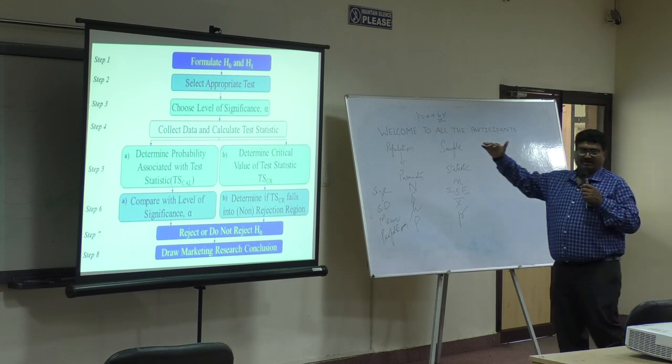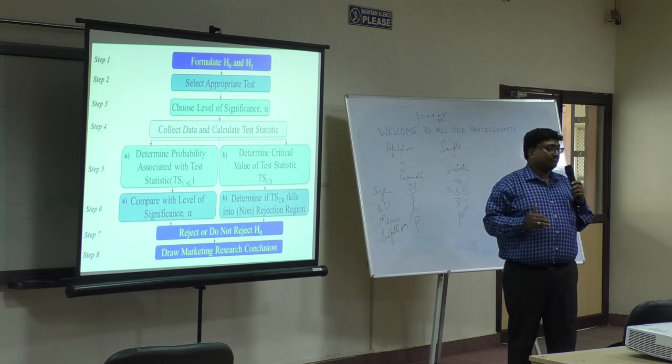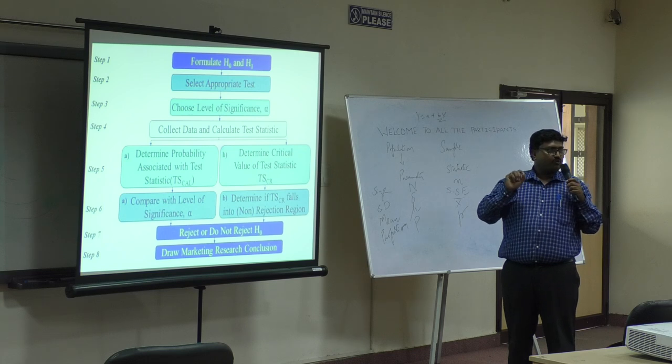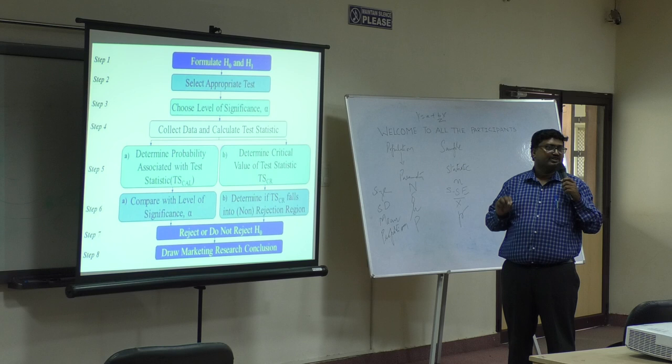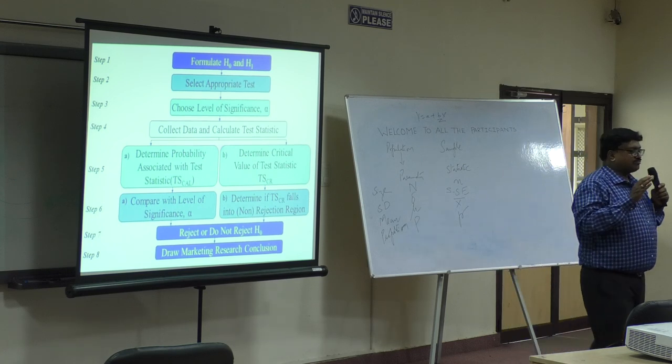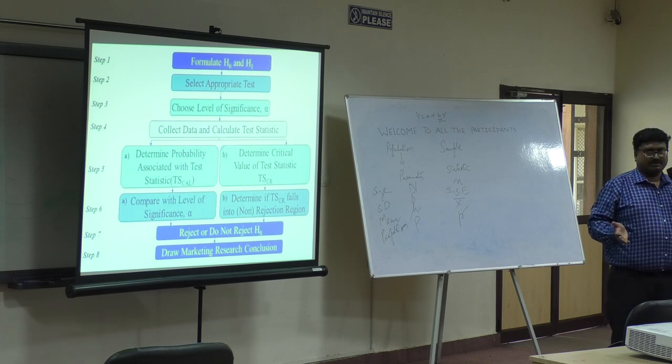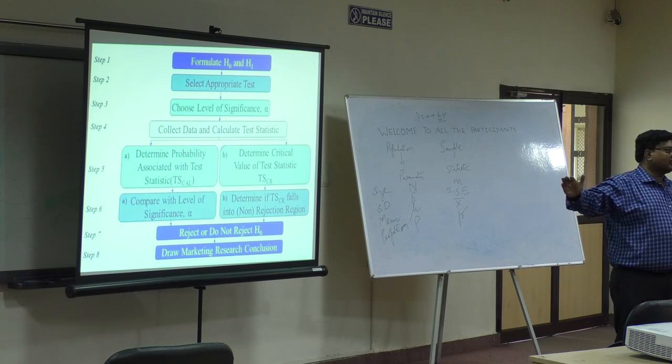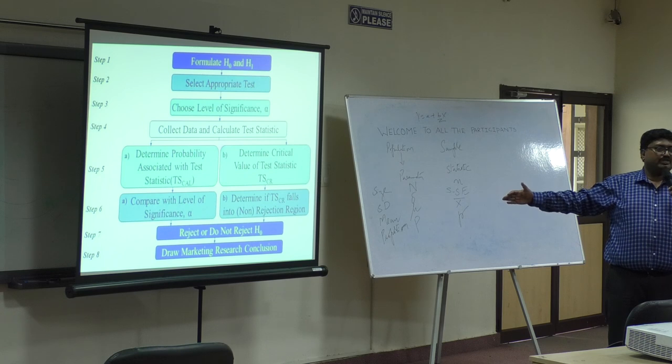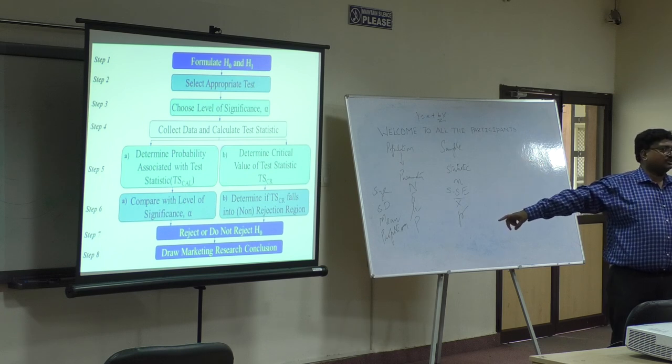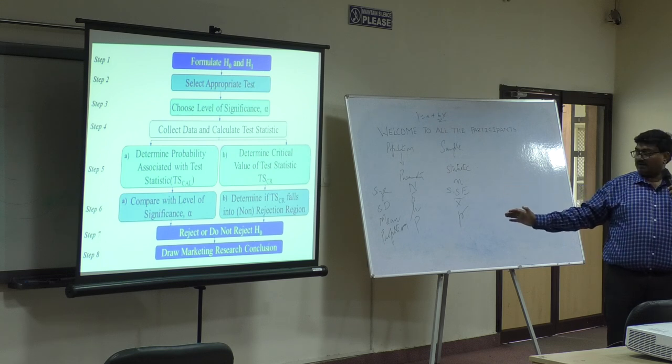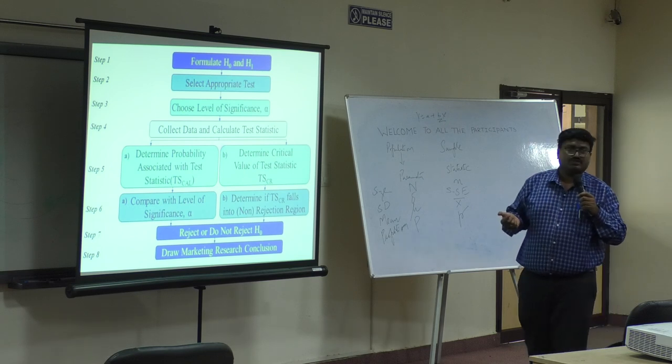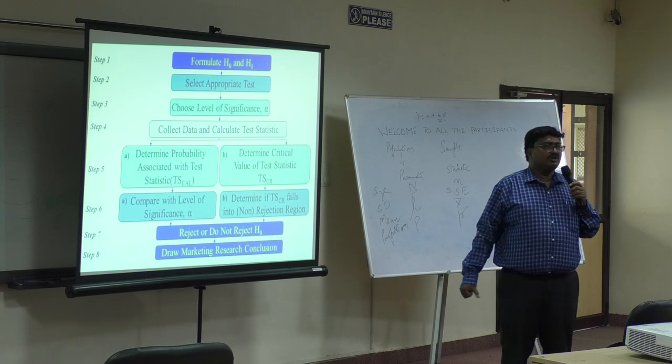You have to formulate a null and alternate, then select an appropriate test—whether it's parametric or non-parametric. You choose a level of significance—the chances of committing a Type I error is alpha, a Type II error is beta. What is alpha? Null hypothesis being right and you reject it. What is beta? Null hypothesis being wrong and you accept it. You collect data, determine the probability, and see whether it lies within the confidence limit or goes beyond it. You decide whether to reject the null or accept the null—you only talk about accepting or rejecting the null. Whatever conclusions you draw, whether for marketing research, finance, HR, psychology, sociology, or journalism, you have your own things to conclude. Research is domain general.